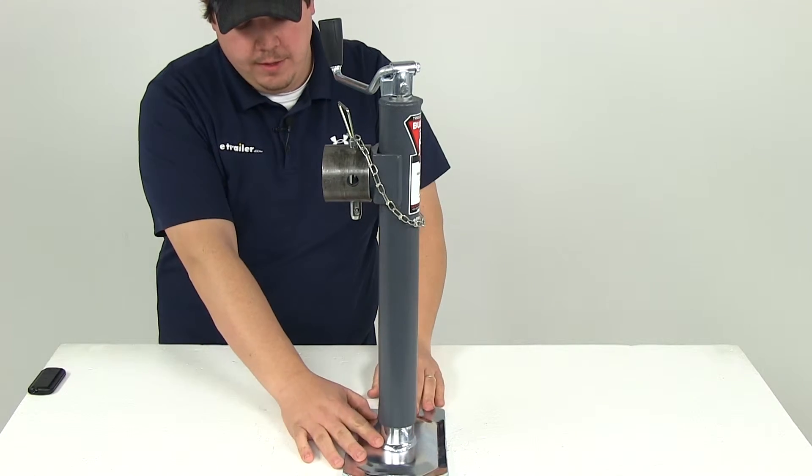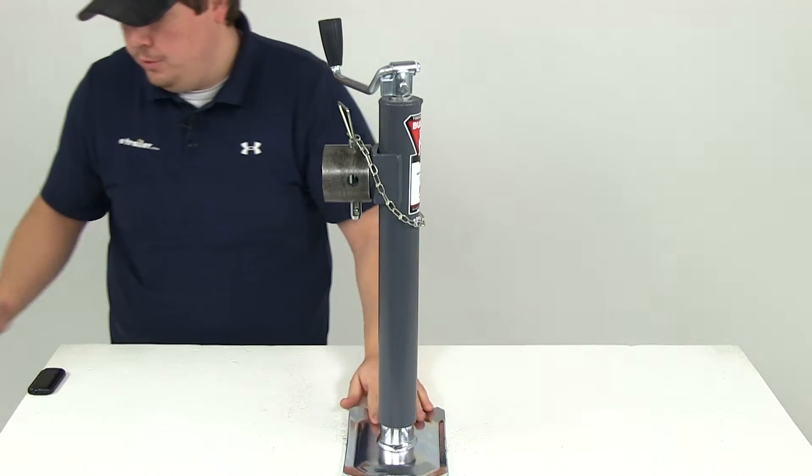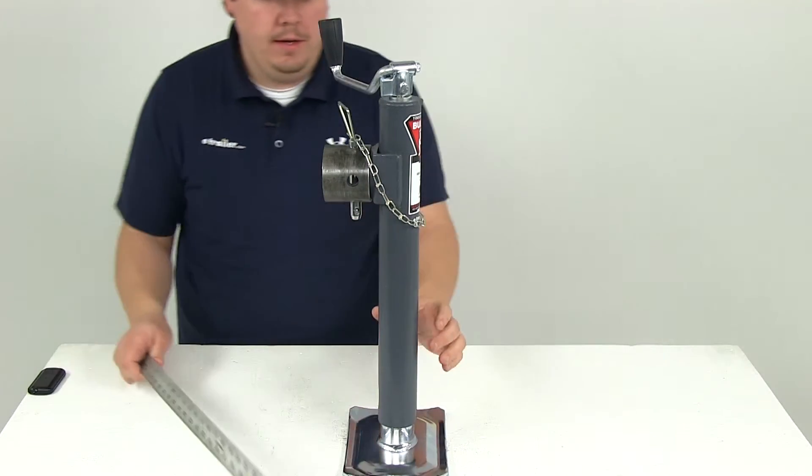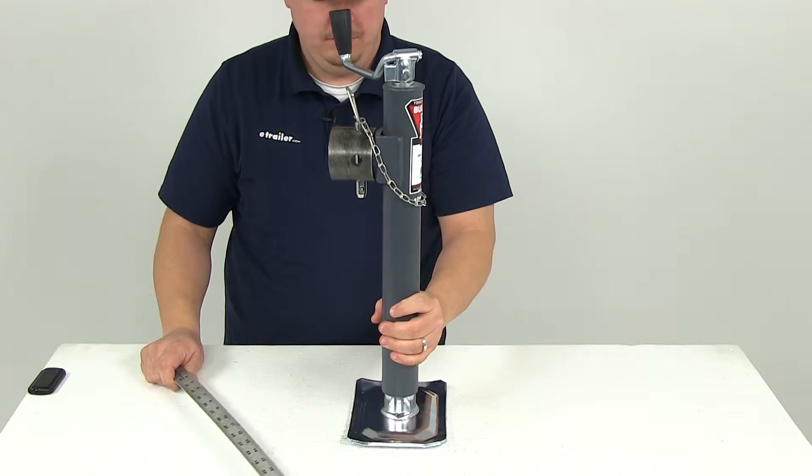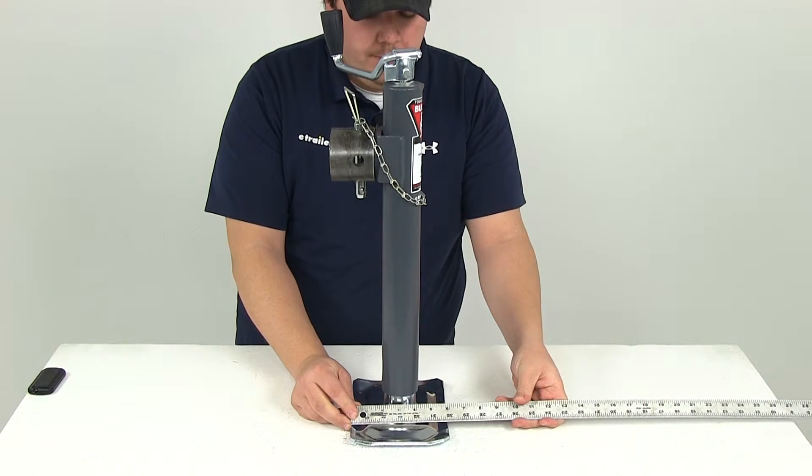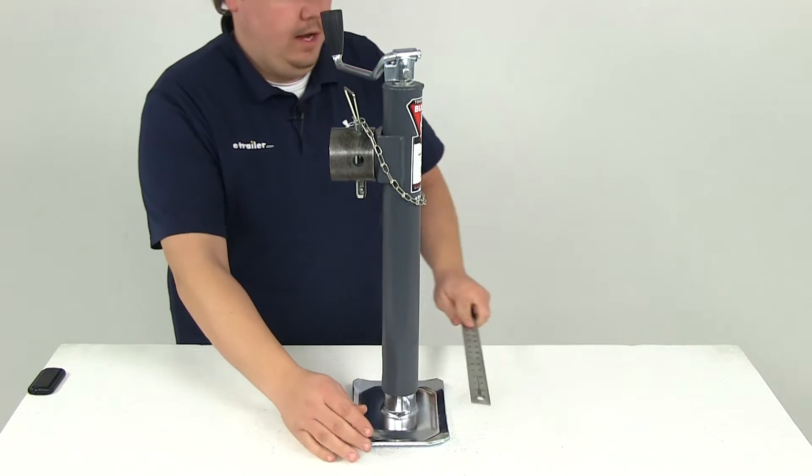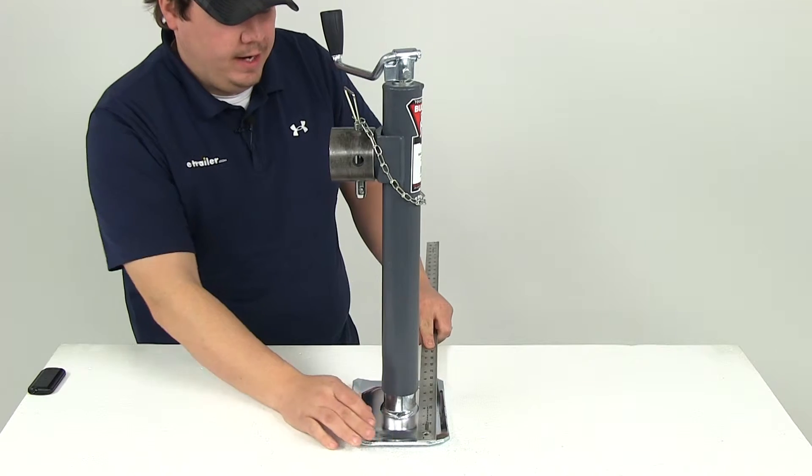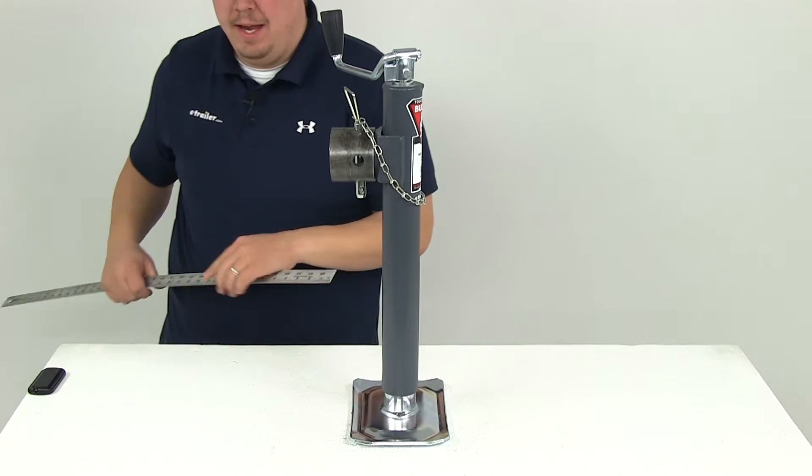It comes with the footplate already welded on to that inner tube. The footplate measurements in this direction give us an overall width of about six inches, and in this direction an overall length of about eight inches, so that footplate is six by eight.